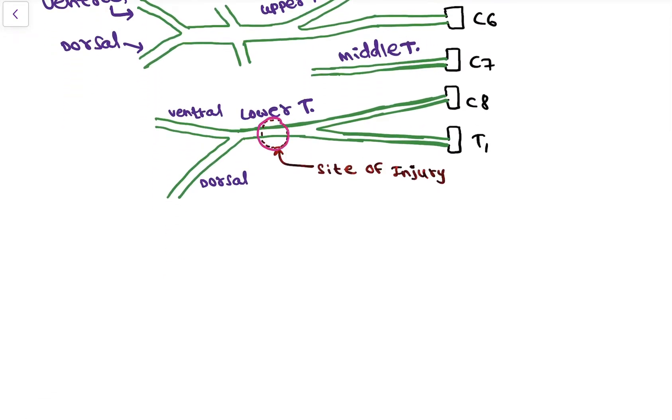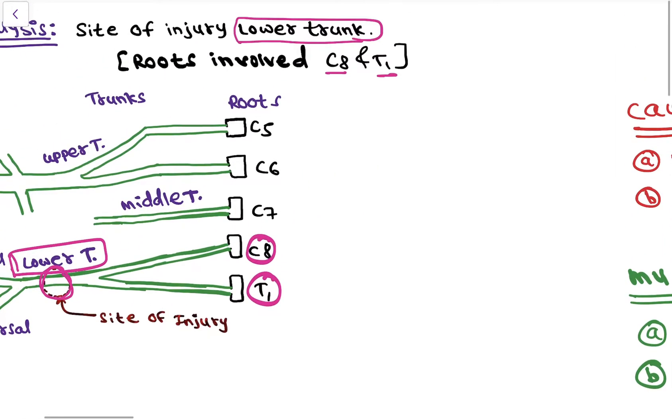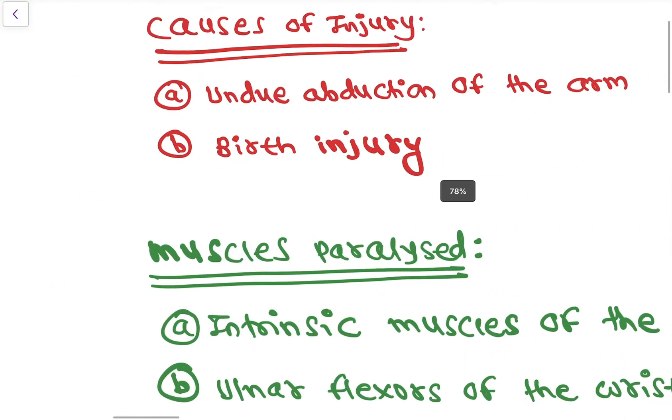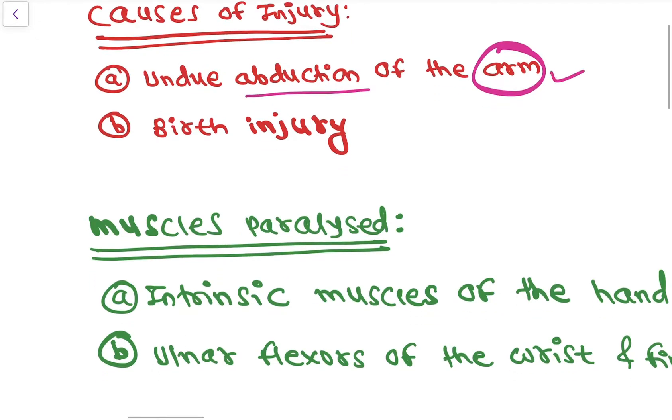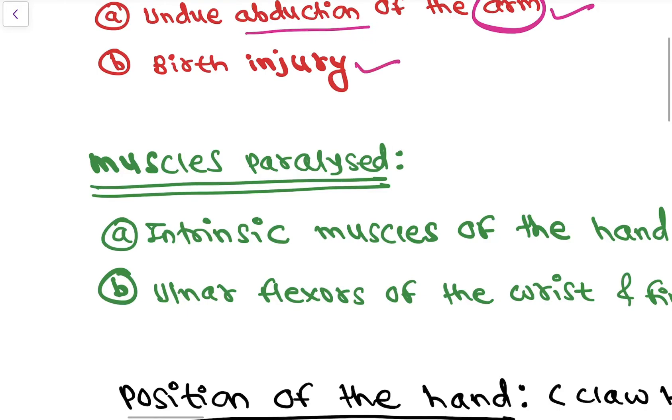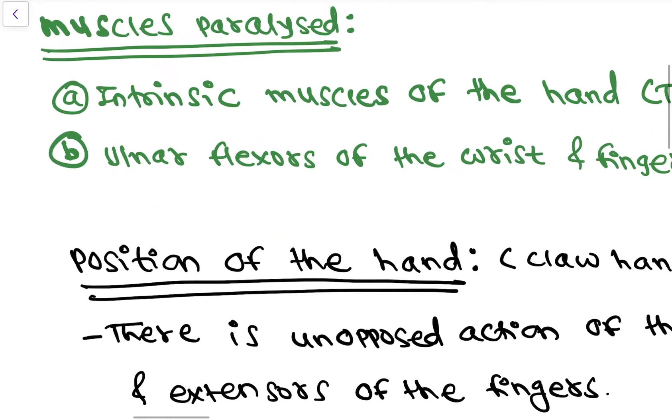So here this is the site of injury, this is the lower trunk, and the roots involved are C8 and T1. Now we learn the causes of injury. The first cause is undue abduction of the arm, like clutching something with the hands after a fall from height. The second cause is birth injury.